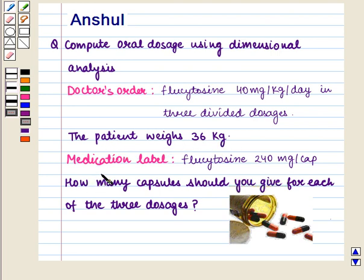The medication label says Flucytocin 240 mg per capsule. How many capsules should you give for each of the 3 dosages?